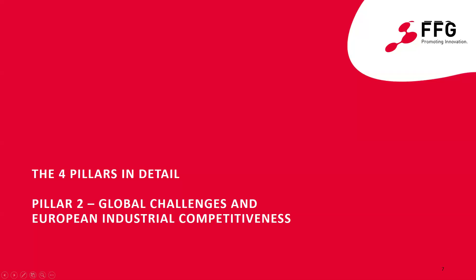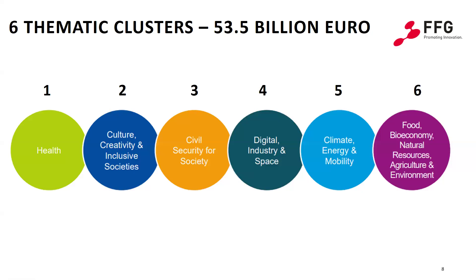Now to pillar two, Global Challenges and European Industrial Competitiveness. This pillar has a budget of 53.5 billion euros and primarily implements the following Horizon Europe objectives: supporting and disseminating high quality knowledge, technologies and sustainable solutions, as well as strengthening European industrial competitiveness. This is implemented through six thematic clusters, some of which combine different areas from previous programs — for example, cluster five covers climate, energy, and mobility. All clusters are implemented through annual work programs with one or more calls for proposals, which clearly define the topics for which projects can be submitted. Keywords for the broad thematic coverage of the clusters can be found in the presentation.